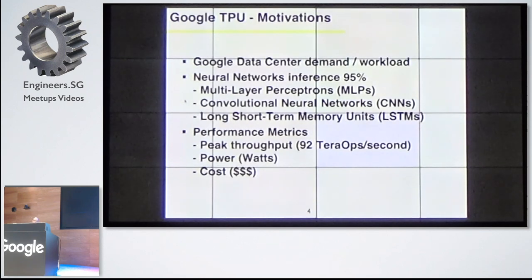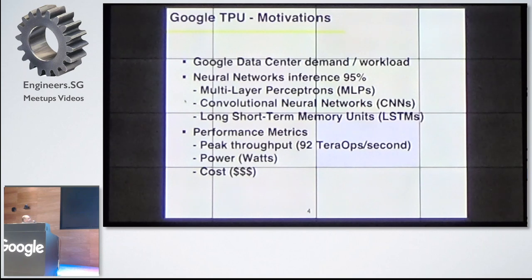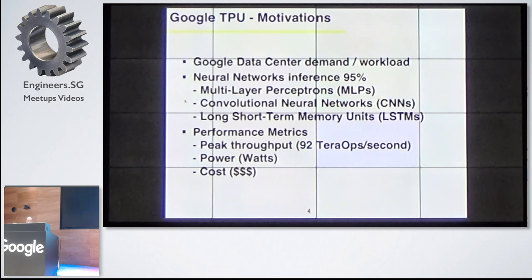The main motivation really behind developing this TPU is that the Google data center has a lot of demand and workload. Basically, a lot of the neural network inference — 95% of them — include multi-layer perceptrons (MLPs), Convolutional Neural Networks (CNNs), and Long Short-Term Memory units. Google wanted to develop some ASIC, some real alternative to CPU and GPU hardware, to provide peak performance. This paper explains the details of the TPU and compares performance in terms of peak performance, watts, and cost.